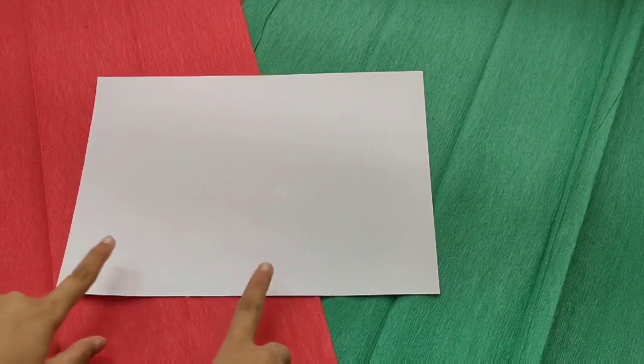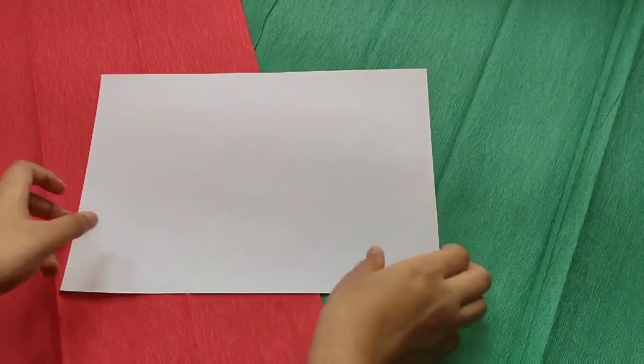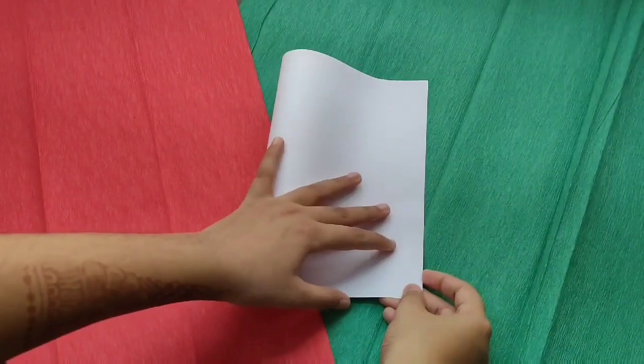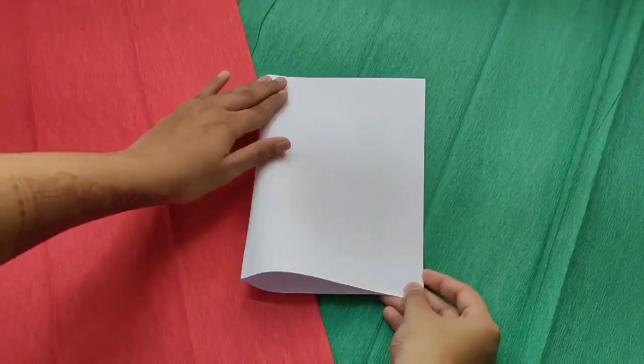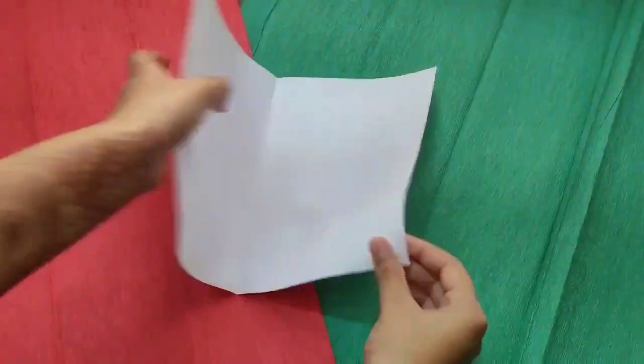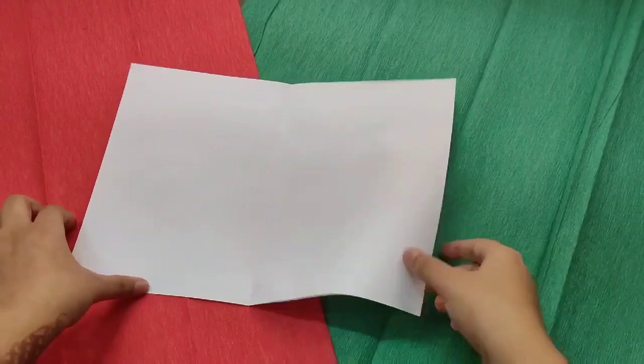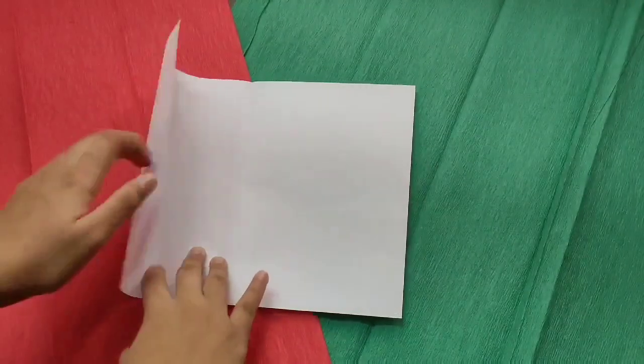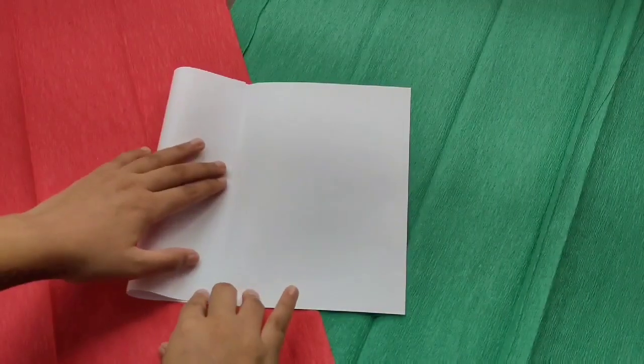First of all, we are going to make a Christmas star. For this, you will need an A4 sheet. You can choose any color. I have taken white today. Now let's start making it. First, I am going to fold it and make a light crease here and at this end. This is how you have to do it. Now, just fold it like this to this line.